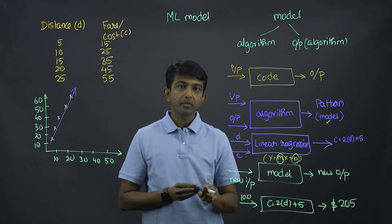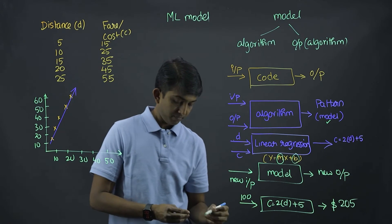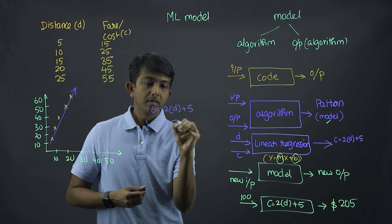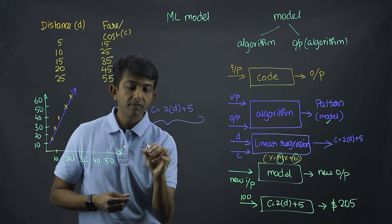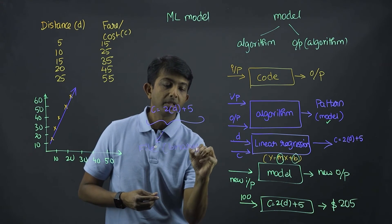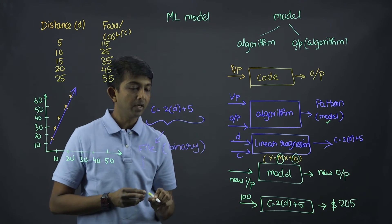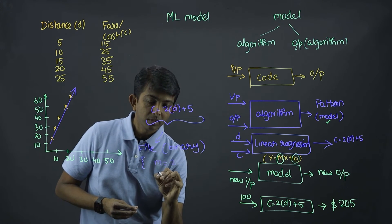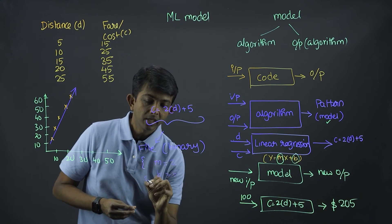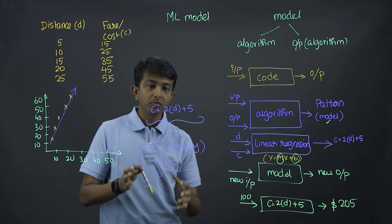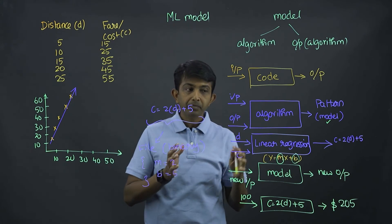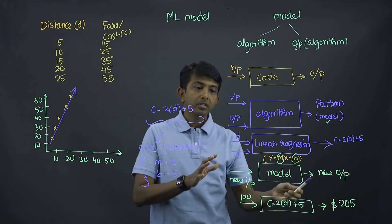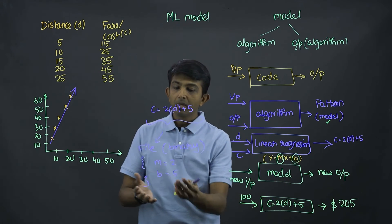But how does it really look internally for a computer? This would internally be stored in a file, which could be in a binary format or other different formats. What this file would have is nothing but the weights of the model — let's say M equals two and B equals five. So this is how it's represented internally. The output of an algorithm is nothing but the pattern stored in a file format, which could be binary or a different format, along with the associated weights.